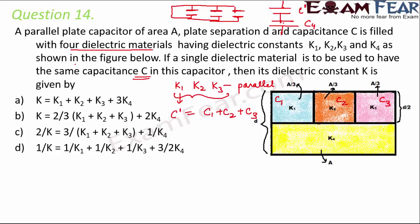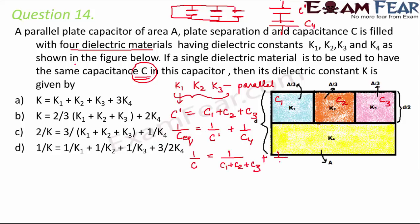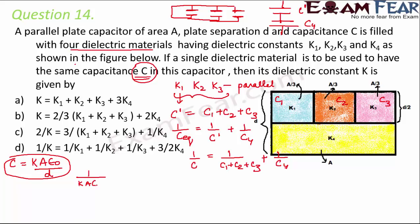Therefore 1/C_equivalent = 1/C' + 1/c4. Since the net capacitance of the system is C, we write 1/C = 1/(c1 + c2 + c3) + 1/c4. The capacitance of a parallel plate capacitor with a dielectric is C = kAε₀/d. Substituting, 1/(kAε₀/d) = 1/c1+c2+c3 + 1/c4.